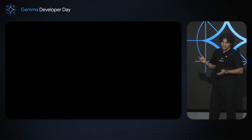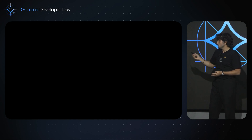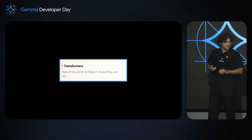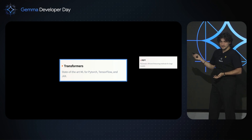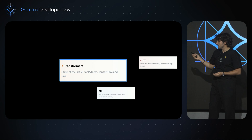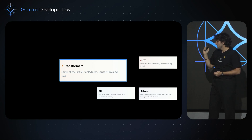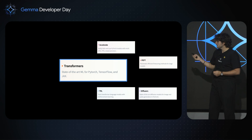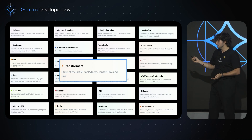Your first encounter with HuggingFace was probably as a developer through the Transformers library. But indeed, there are many more. We have PEFT to fine-tune your model, that goes hand-in-hand with TRL to further align your model to a use case, diffusers to generate images, accelerate for hardware optimization, and in fact many more.